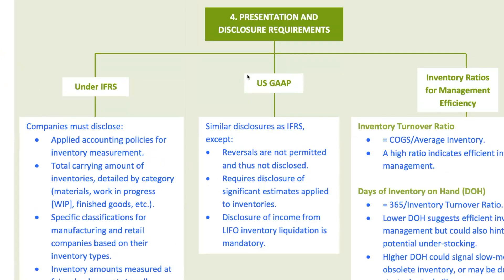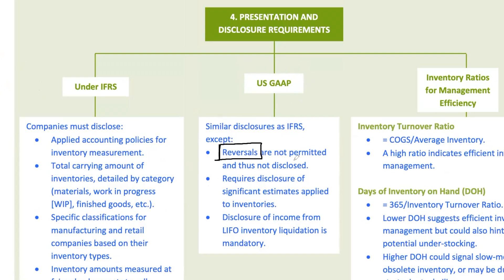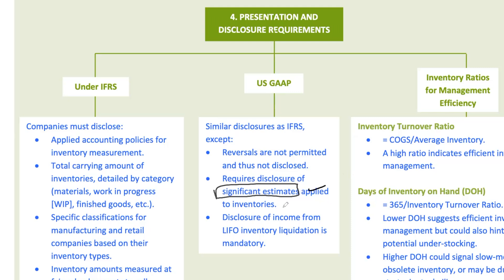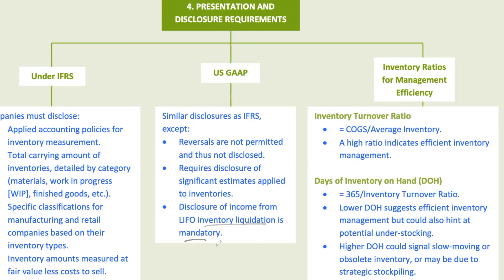Under US GAAP, the requirements are similar but with a few key differences. Reversals of write-downs aren't allowed under US GAAP, so companies don't need to disclose them. However, they must disclose any significant estimates applied to inventories, and if a company has earned significant income from the liquidation of LIFO inventory, that also needs to be disclosed.